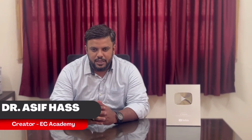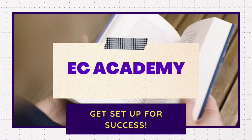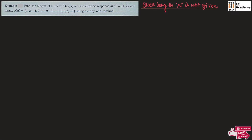Hello friends, welcome to EC Academy. In this lecture, let us understand a problem on convolution using the overlap-add method. The impulse response h(n) is given along with the input x(n), and we need to perform the convolution using the overlap-add method.